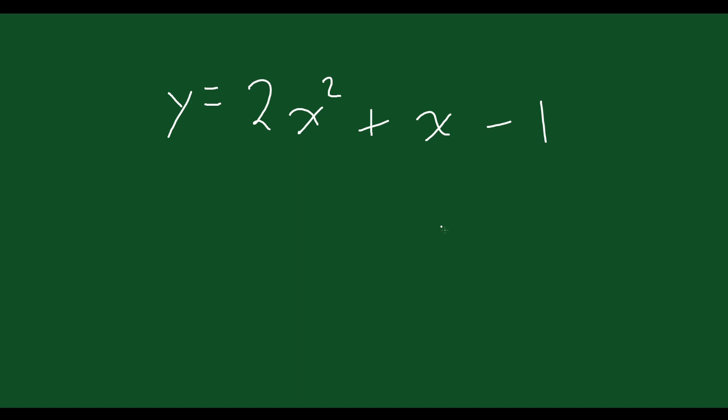x equals negative b over 2a. But if you don't want to use any of those, what you can do instead is just do some partial factoring. And what that is, is when we factor just the first two terms. So if you common factor these first two terms, you can take out an x, and you'll be left with 2x plus 1, and then you have minus 1 over here on the end.